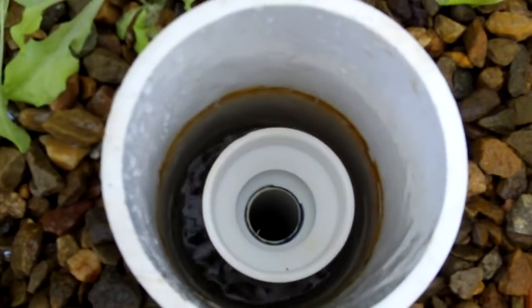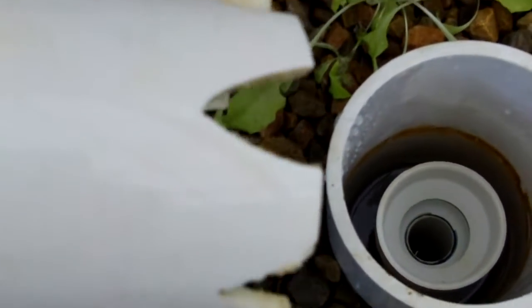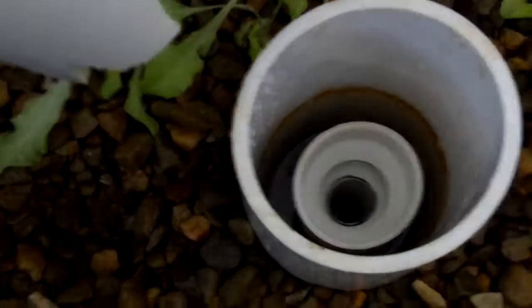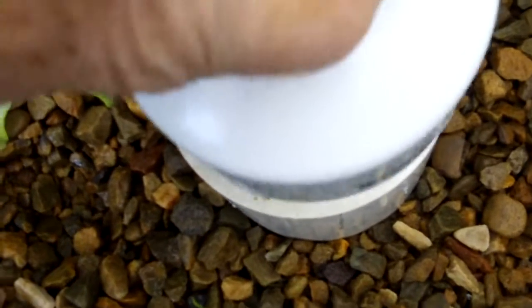When it gets to the bottom, air goes in and that breaks the siphon. This system drains pretty much right to the bottom of the grow bed, which is important because you want a full exchange of the water.